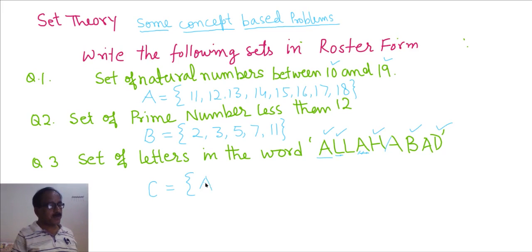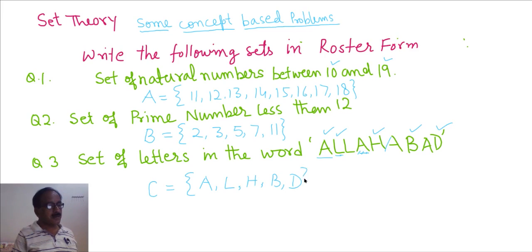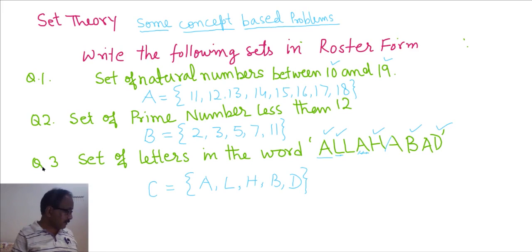So A is the element of set C, then L, H, B, D. This is set C. So this is the solution of problem number 3.